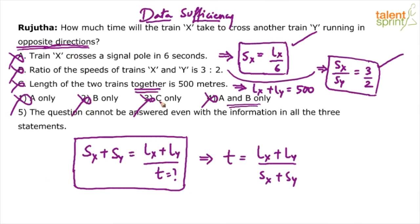If one, two, three and four are wrong, obviously option five is correct. And option five says the question cannot be answered. You cannot answer this question even with the information in all the three statements, which is absolutely correct. Even if you use the information in all the three statements, you will not be able to answer.